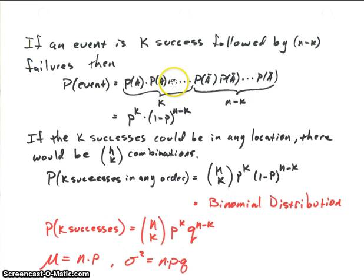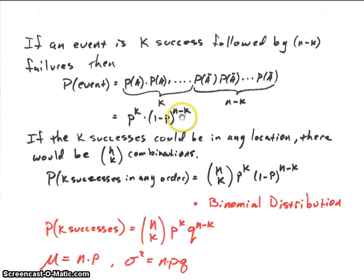Since the successes are all p and the failures are all 1 minus p, the probability of those occurring in that exact order will be p to the k times 1 minus p raised to the n minus k. That's the probability if they were in that exact order.